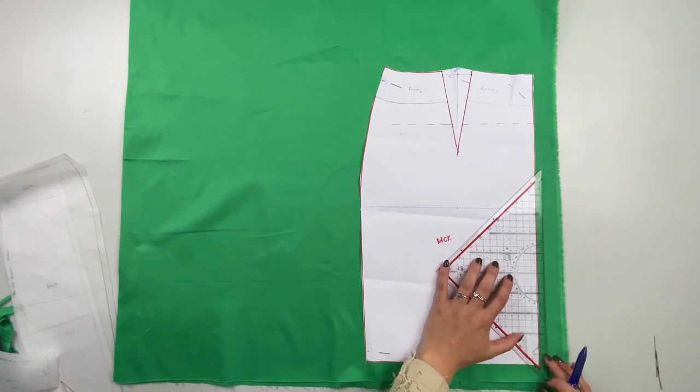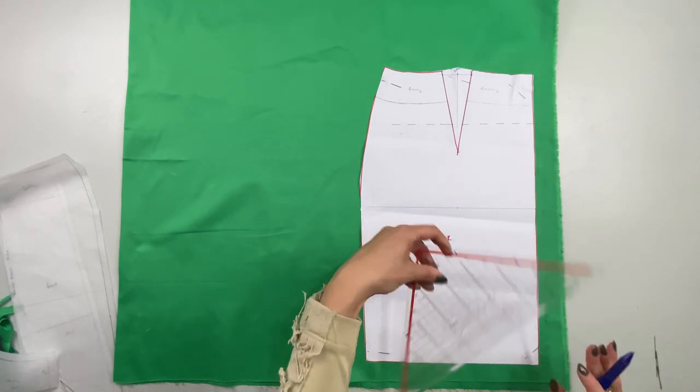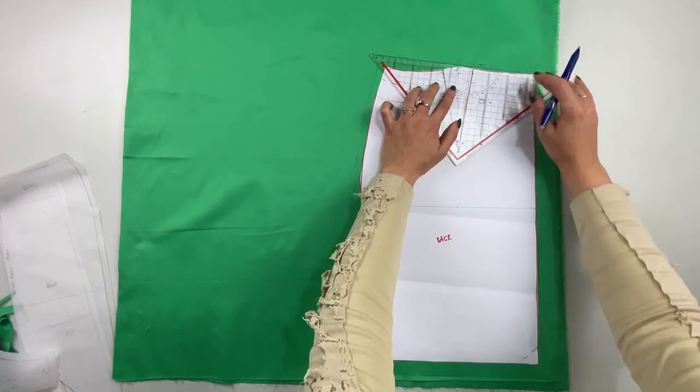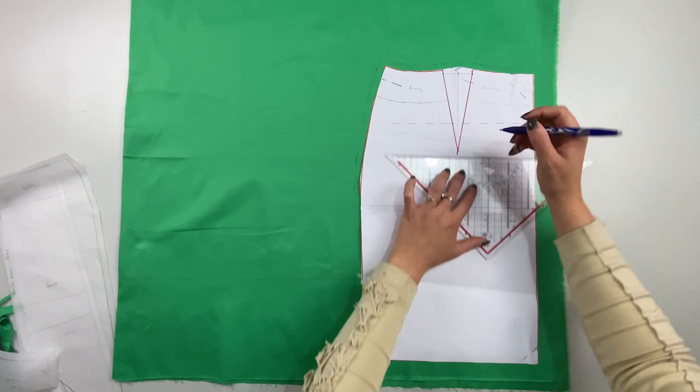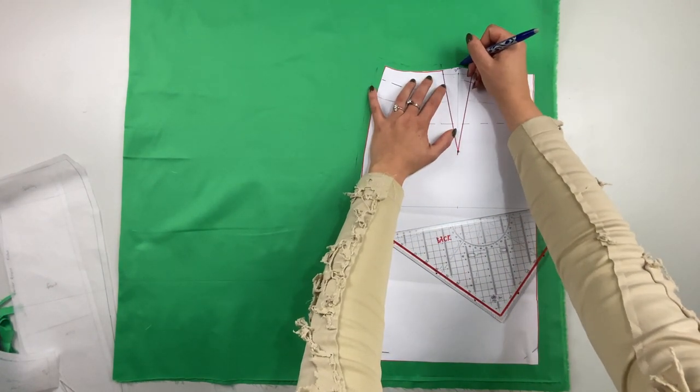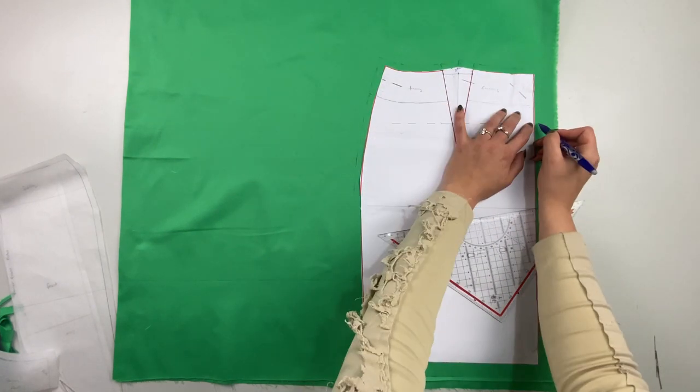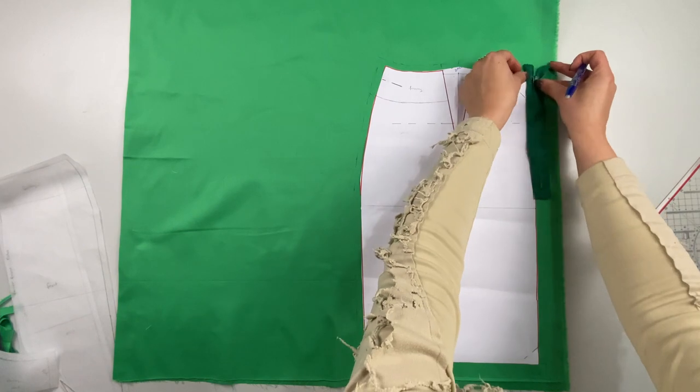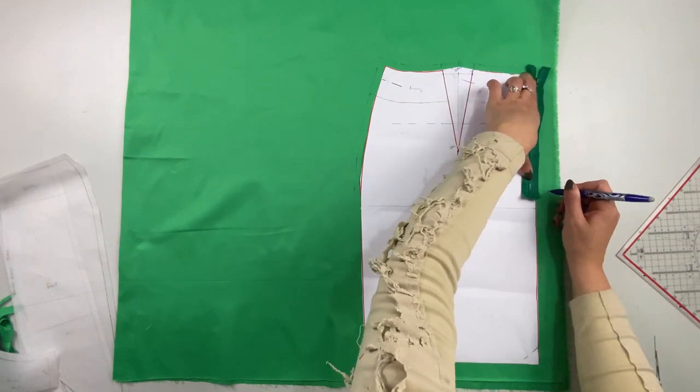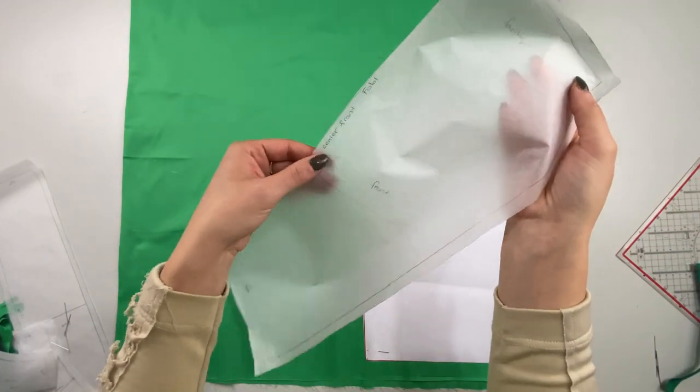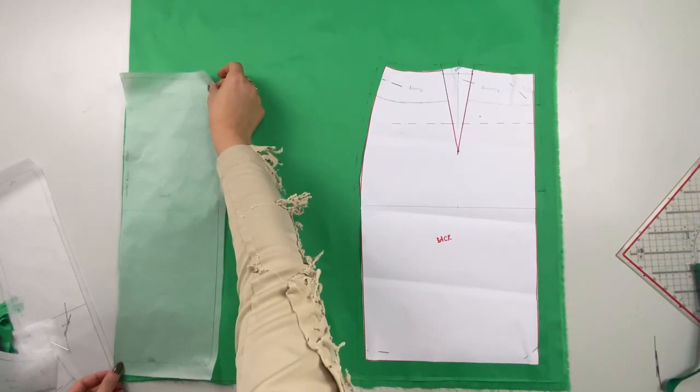The back skirt part that is still the original pattern piece does not have a seam allowance added yet, so I need to add that one on the fabric before cutting it out. The dart point also needs to be marked by marking a little hole into the pattern and push the fabric marker through. I make some additional marks for where the facing and dart legs begin and where the zipper will end.